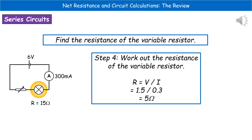The last step is to find the resistance of the variable resistor. We now have enough information: the potential difference across it is 1.5 volts, and because this is a series circuit, the current is the same everywhere — 0.3 amps. Rearranging V = IR gives resistance = V ÷ I, so 1.5 divided by 0.3 equals 5 ohms. Remember to include the units if they're not given in the answer line.